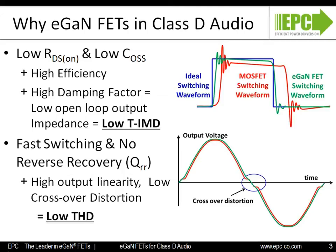Next, total harmonic distortion can also be lowered in eGANFET-based Class-D systems. In silicon MOSFET systems, reverse recovery time adds to dead time and noise, which causes distortion in the output waveform. With power MOSFETs, higher open-loop impedance and longer dead time call for excessive feedback to improve audio performance. Excessive feedback limits the bandwidth and introduces intermodulation distortion and low dynamic response. eGANFETs can switch very quickly and have zero reverse recovery, resulting in high output linearity and low crossover distortion, yielding lower total harmonic distortion.